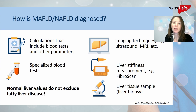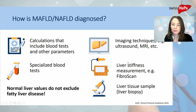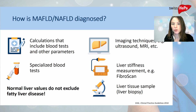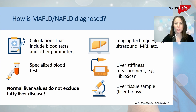If there is a suspicion of liver disease, you would be referred for further testing such as imaging or liver stiffness measurement. In some cases, for staging of the disease, we need to perform a liver tissue sample — a liver biopsy. This is reserved for special cases only, as it is an invasive technique and, of course, also painful for the patient.